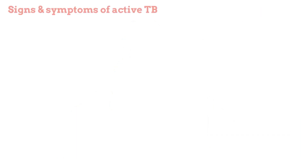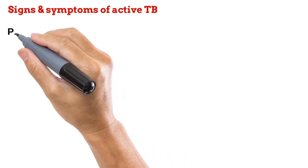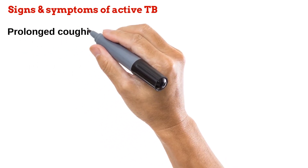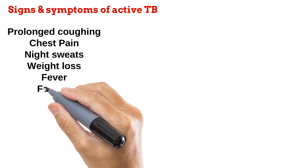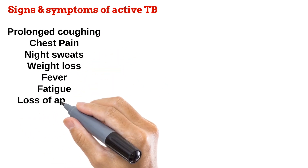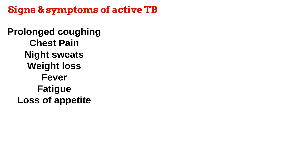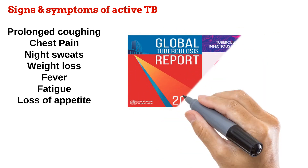When a person is sick due to an active tuberculosis, the following signs and symptoms are manifested: prolonged coughing which occasionally contains blood, chest pain, night sweats, unintentional weight loss, fever, extreme fatigue, and a loss of appetite. These symptoms get worse over time, leading to death if left untreated.